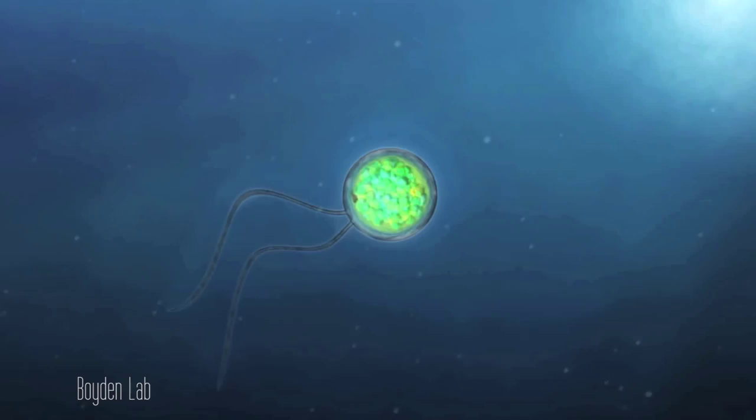Of course, most neurons do not respond to light, which is a good thing. What we want to do is basically put molecules into neurons that convert light into electricity, and then aiming light at those cells will turn them on or off.